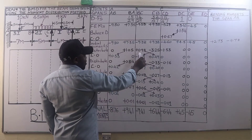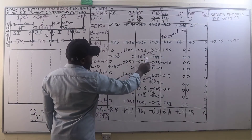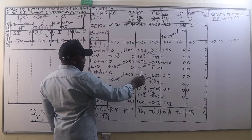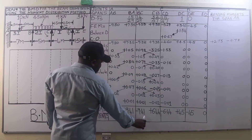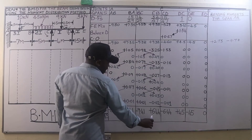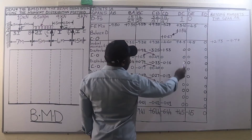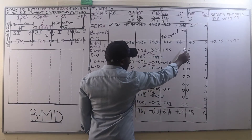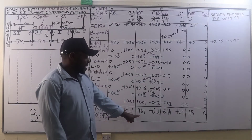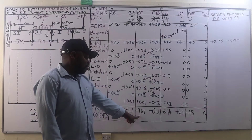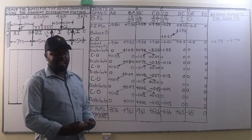On member BC we add all the moments — minus 9.38 plus 0.98 minus 1.63 plus 0.79 and so on — arriving at negative 9.41. On member CD we similarly get negative 6.44. When you look at each joint, the resultant moment is zero, meaning all joints are now balanced and the beam will not fail.